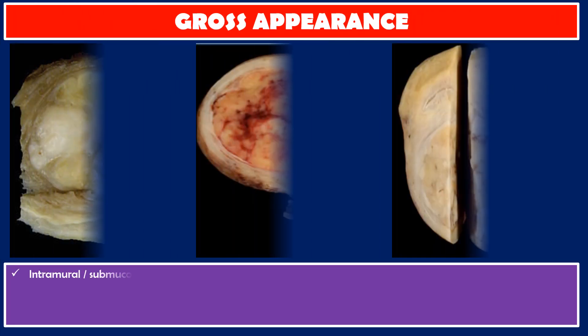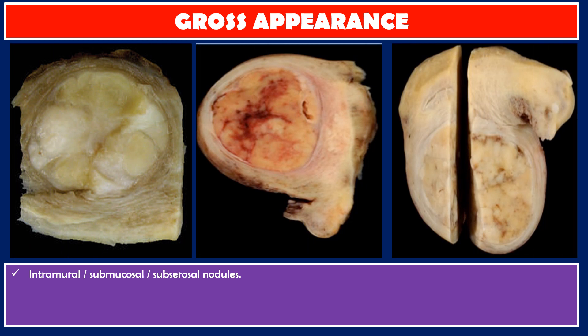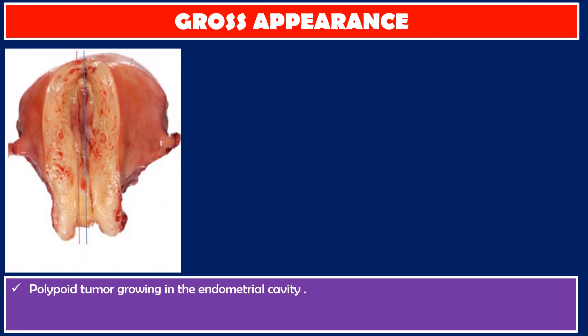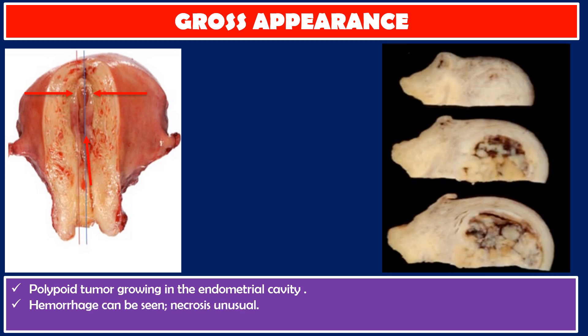Gross appearance. Here in these photos, we see intramural, submucosal, subserosal nodules. They are solid, round, well-circumscribed masses, but unencapsulated, with average 6 cm, ranging from 2 to 24 cm. Cut surface is grayish-yellow to tan-white. It has a firm to soft to rubbery consistency. Here we see a polypoid tumor growing in the endometrial cavity. Hemorrhage can be seen.